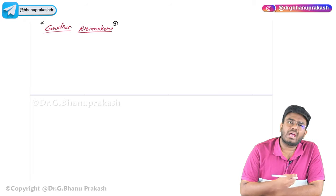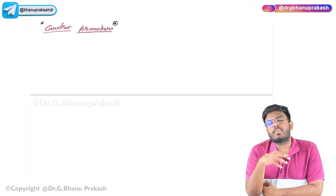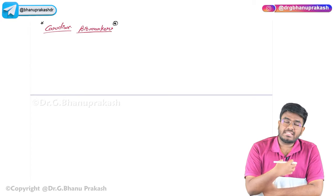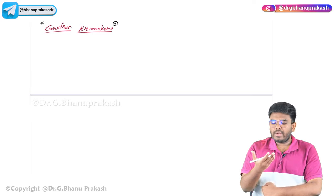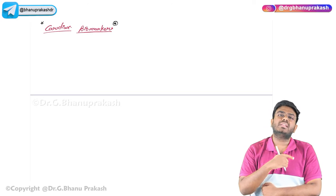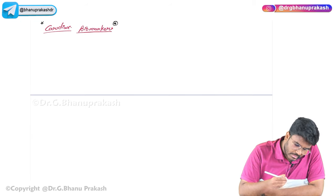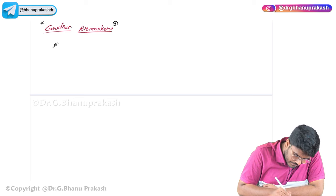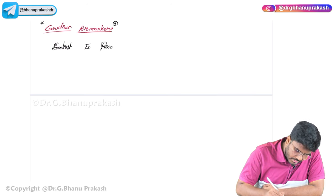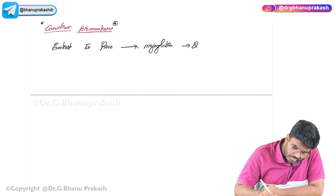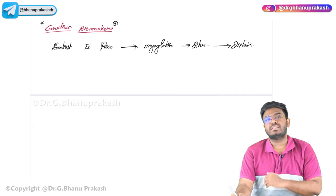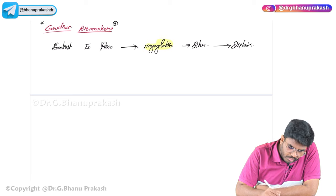When the heart cells are dying, the cell membrane is getting damaged, and the enzymes and proteins present in the myocytes are going to leak into the blood. Cardiac biomarkers in the blood indicate myocardial cell damage. The earliest cardiac biomarker to rise in myocardial infarction is myoglobin - it rises within 2 hours and comes back to normal in 24 hours.